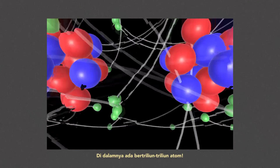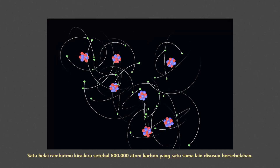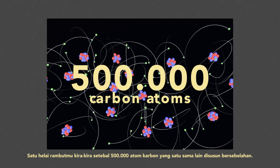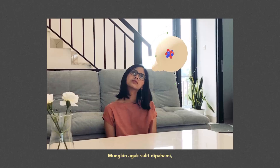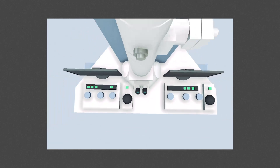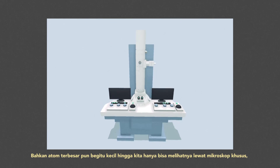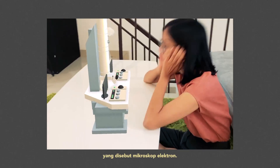Look at your hands — it contains trillions of atoms. Your hair is about as thick as 500,000 carbon atoms stacked over each other. It's difficult to understand at first, but atoms are ridiculously small. Even the biggest atom is so tiny that we can only see them with a very special microscope, called an electron microscope.